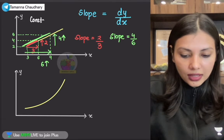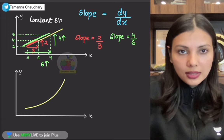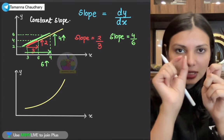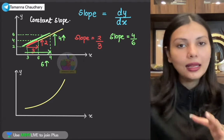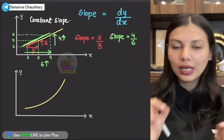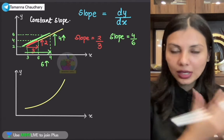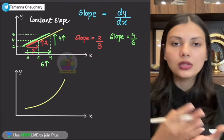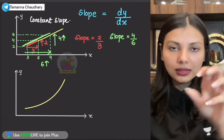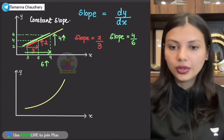I want to show you that this is a graph with a constant slope. This means that if I take a small change in the X quantity — before or after — it would not matter. The change in Y will be the same. For straight line graphs, the slope is always constant. For per unit change in the X quantity, the change in the Y quantity is always going to be fixed.